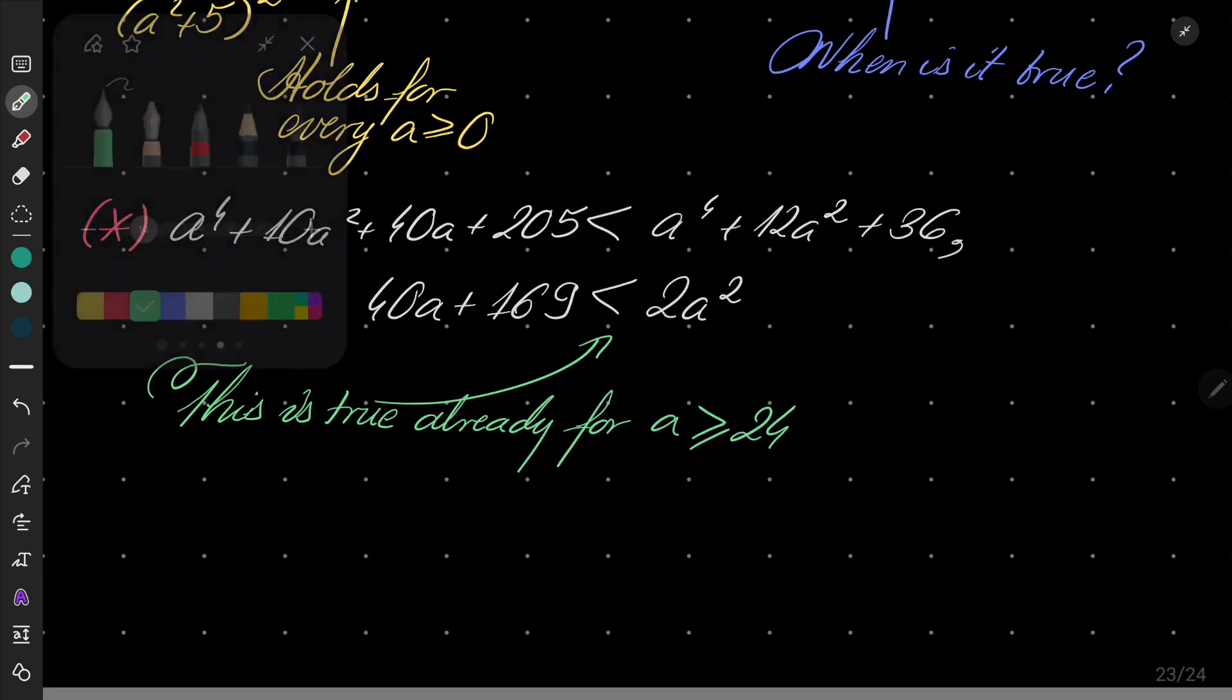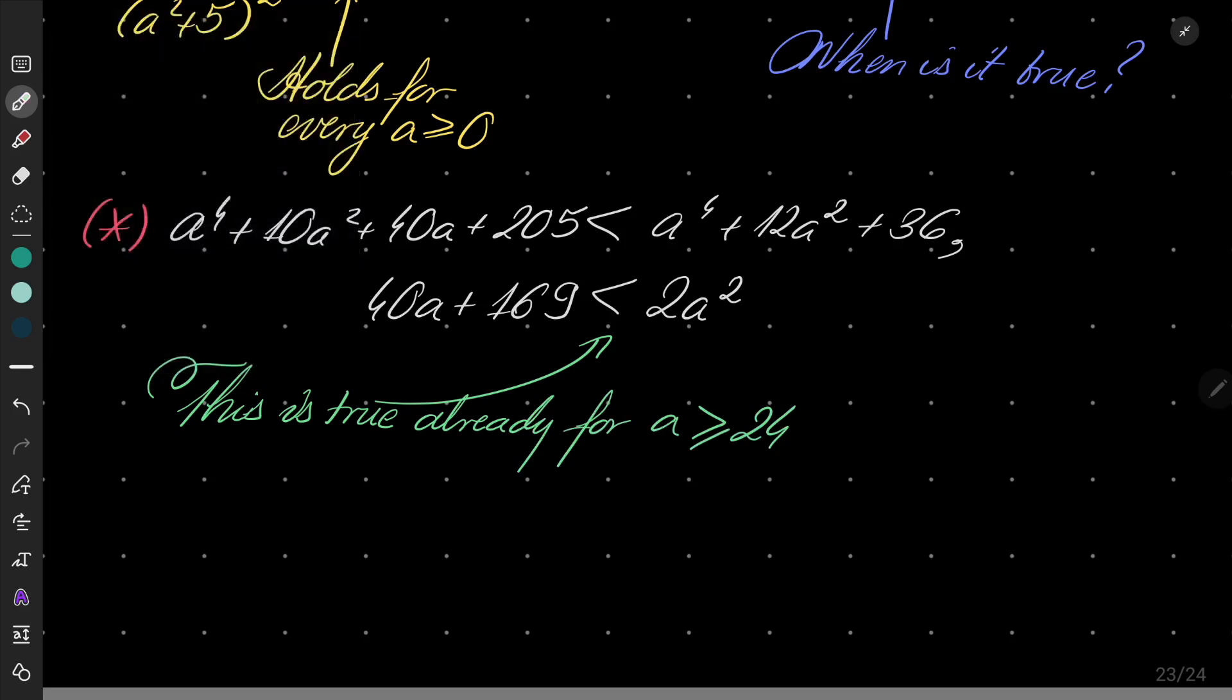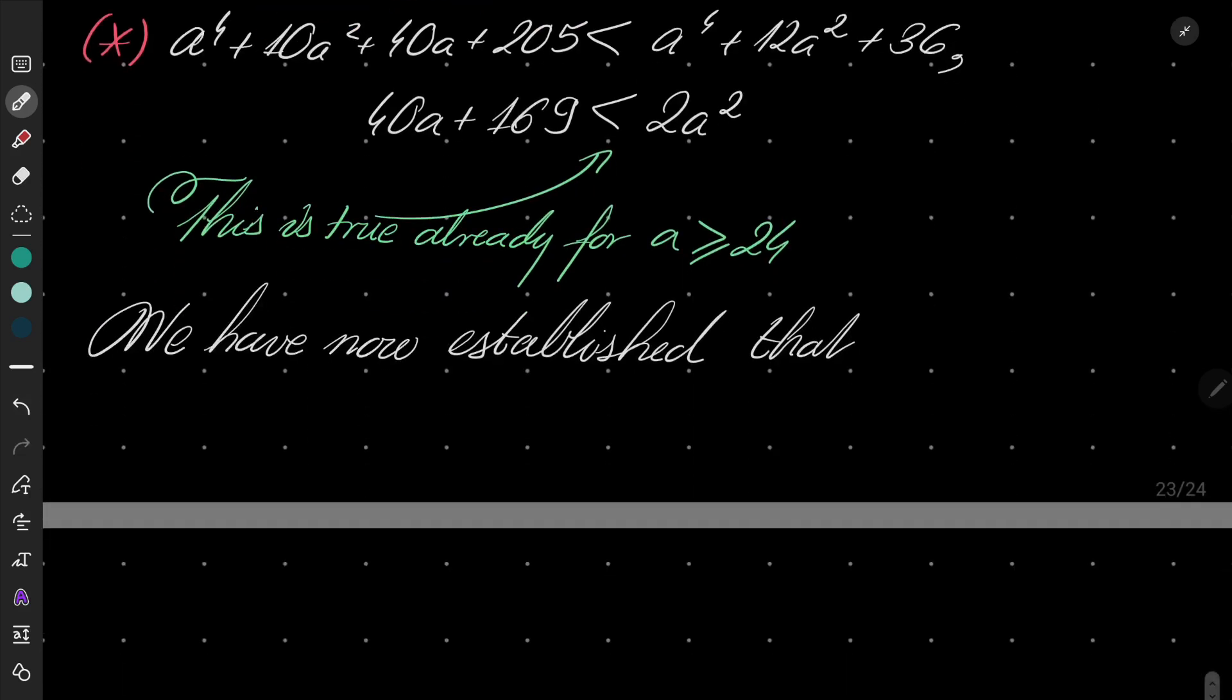In other words, we have now established that our sum cannot be a square if a is greater than or equal 24.